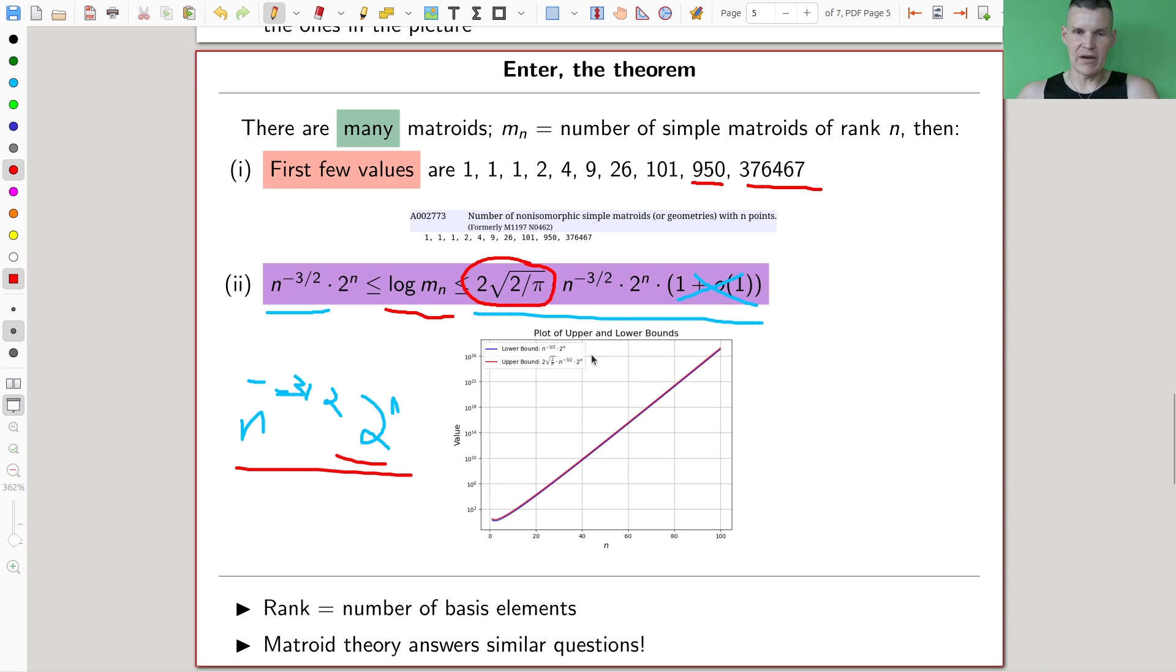So you squeeze it actually in a pretty good way. You're not calculating m_n precisely. As I said, it's difficult, but you can actually squeeze it very efficiently. And if you plot those two, so this guy here and the one with the scalar, you essentially can't distinguish them anymore in a plot. It's kind of a really good estimate of the number of matroids, which is a bit surprising because the number of graphs is actually really difficult to estimate.